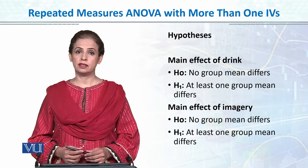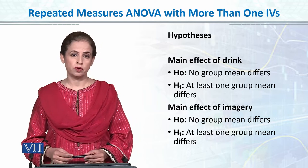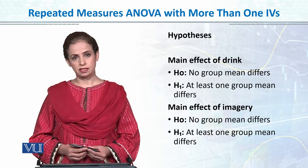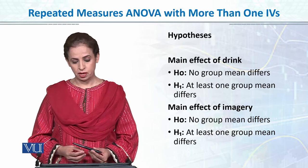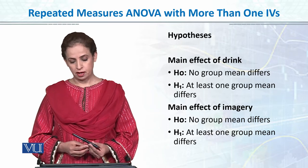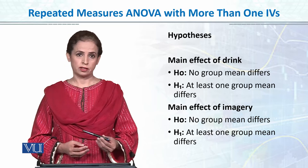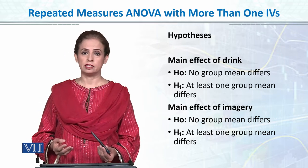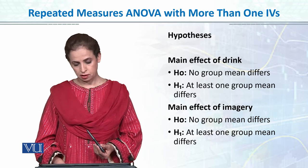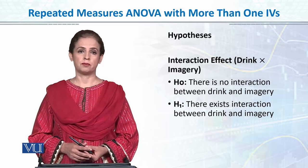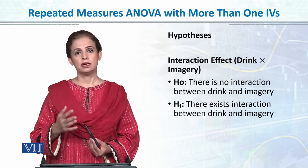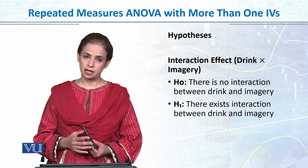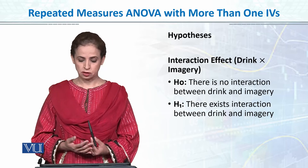We will construct hypotheses just as we did in independent two-way or one-way ANOVA. For the main effect of drink, the null hypothesis is there is no group main effect, or the alternative is that at least one group mean differs. For the main effect of imagery, the null hypothesis is there is no difference, or the alternative is that at least one group mean is different from the other groups. In the next tutorial, we will use SPSS to test the main effect of the first independent variable, the main effect of the second independent variable, and the interaction of the two variables.